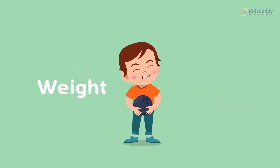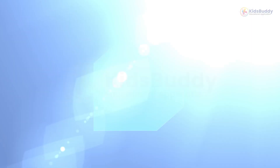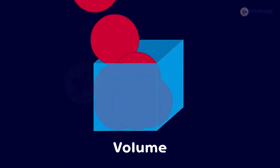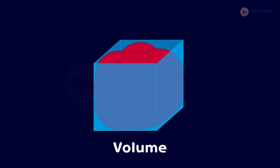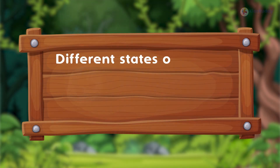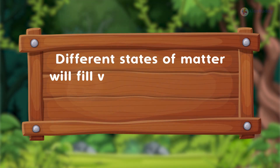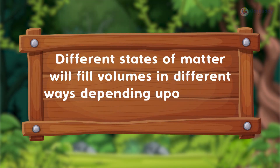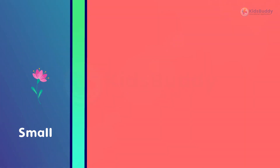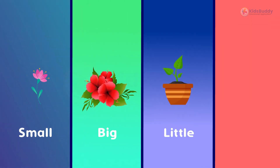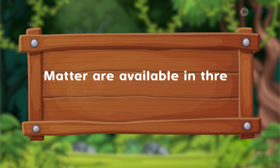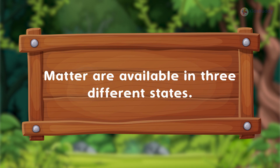You know about weight — it is something that is heavy. Volume is the amount of space something occupies. Different states of matter fill volumes in different ways depending upon their size — small, big, little, or longer. Matter is available in three different states.